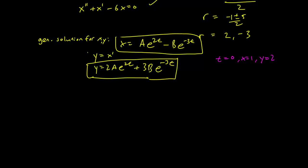So for this one, we get t equals 0, x equals 1. So 1 equals A minus B, because t equals 0 for the exponentials, this becomes 1. From the second equation, we get y equals 2, y equals 2, t equals 0, so you get a 2A over here, and you get a plus 3B over here.